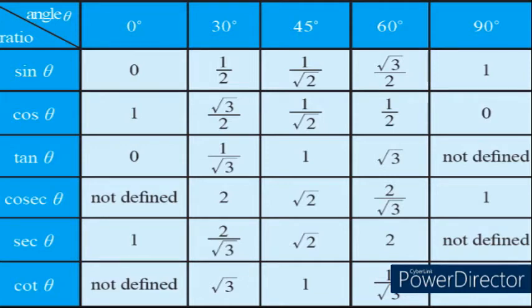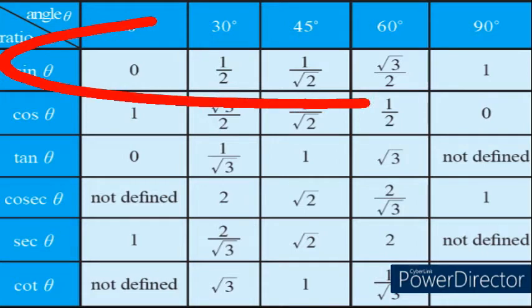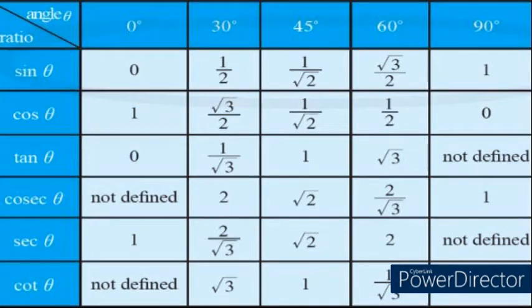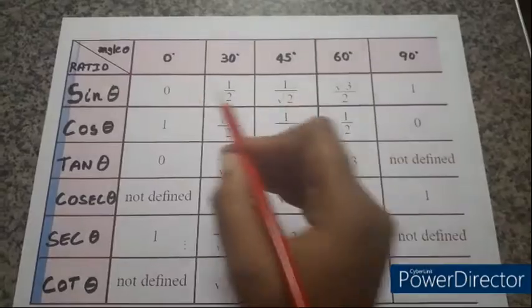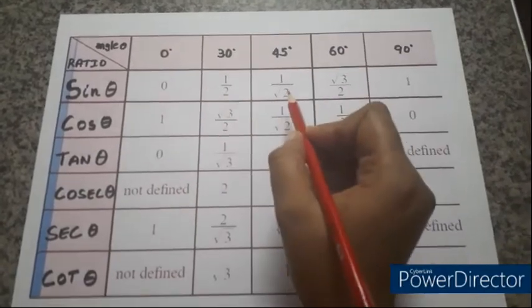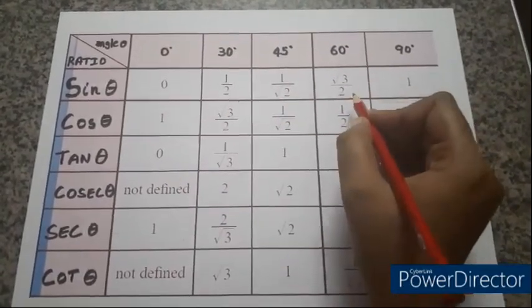Within five minutes, with just five numbers, you only need to remember: 0, 1/2, 1/√2, √3/2, and 1. The order of angles is 0°, 30°, 45°, 60°, and 90°. Let's start with sine theta — write these five numbers from left to right: 0, 1/2, 1/√2, √3/2, and 1.